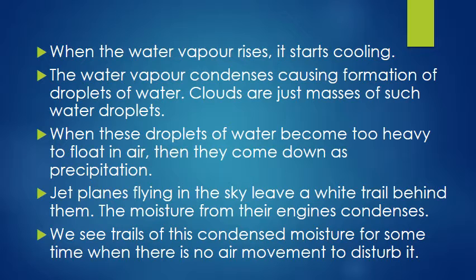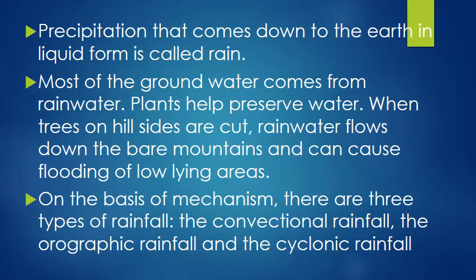Clouds are just a mass of such water droplets. When these droplets of water become too heavy to float in air, they come down as precipitation. Jet planes flying in the sky leave a white trail behind them — the moisture from their engines condenses. We see trails of this condensed moisture for some time when there is no air movement to disturb it. Precipitation that comes down to the earth in liquid form is called rain.